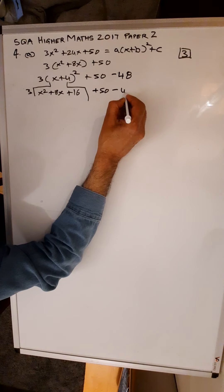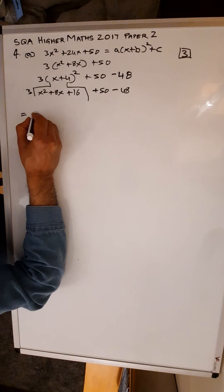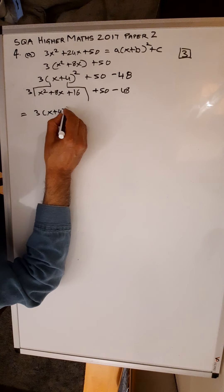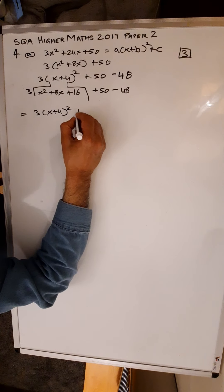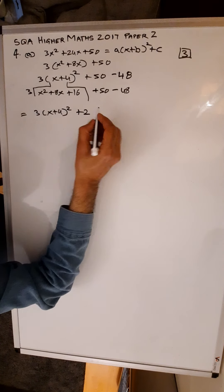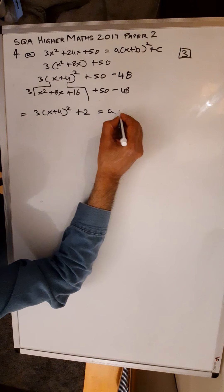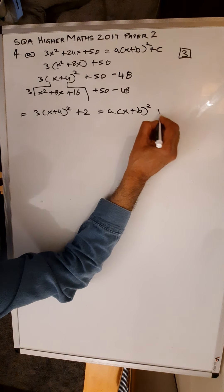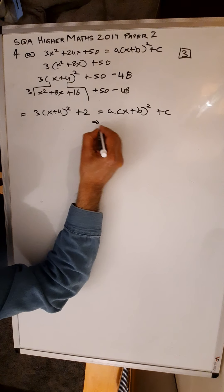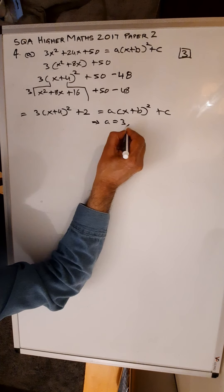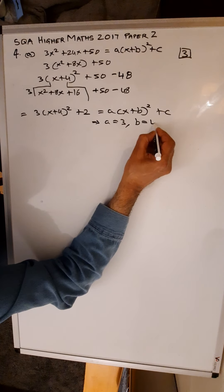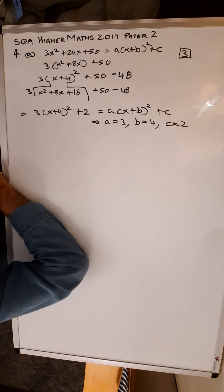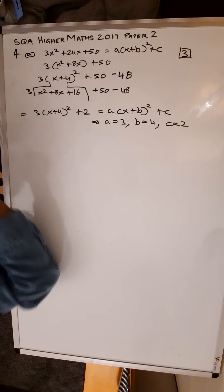So what you have now is 3 outside (x plus 4) all squared plus 2. So now you got that in the form A times (x plus B) all squared plus C, which means that A is 3, B is 4, and C is 2. That's Part A.